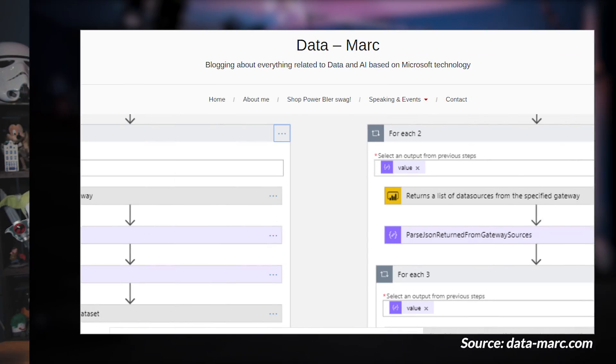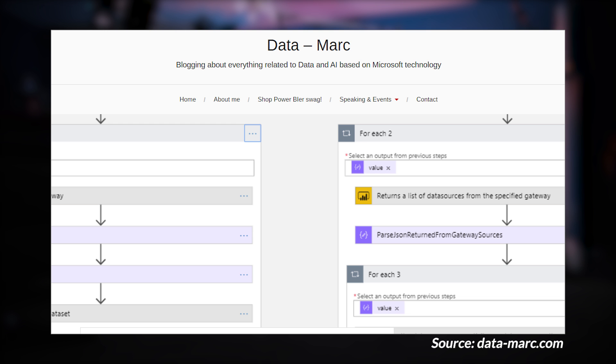Mark Leleveld's got a blog post looking at the on-premises data gateway and how do you monitor those items, especially if you have multiple gateways in your organization. This blog post is actually part two in a two-part series. The first blog post went through how to actually monitor the individual gateway. This one takes it a step further and looks at how do you determine if the data source is up or down.